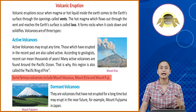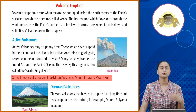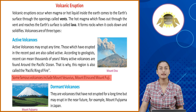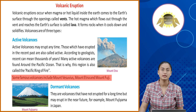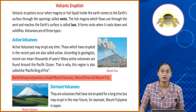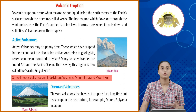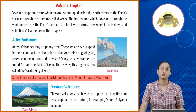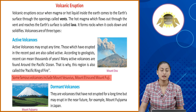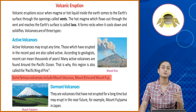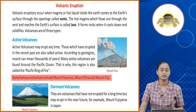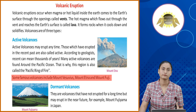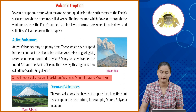Active volcanoes woh volcanoes hote hai jo kisi bhi time pe erupt kar jate hai, ya phir jo recent times mein erupt kar chuki hai. Geologists ke according, recent ka matlab hota hai thousands of years. Ye Pacific Ocean ke aas paas bohot saare active volcanoes hai, isi ki wajah se is region ko Pacific Ring of Fire kaha jata hai.